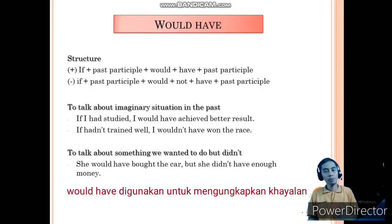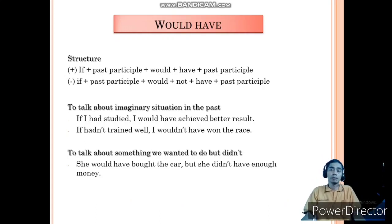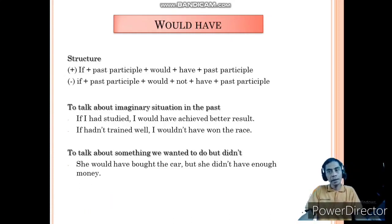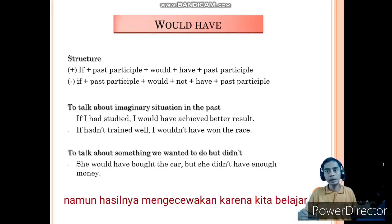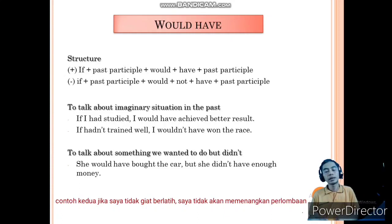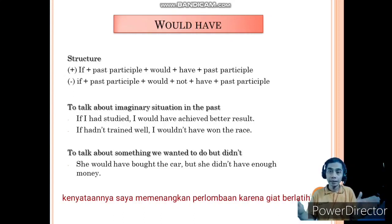The usage of would have is to talk about imaginary situations in the past — we are just making imaginations here, meaning it's impossible to happen. The example is: 'If I had studied, I would have achieved a better result.' Because we didn't study really hard, we didn't get a better result. The second example: 'If I hadn't trained well, I wouldn't have won the race.' The reality is I won the race because I trained really hard.